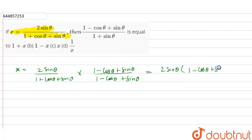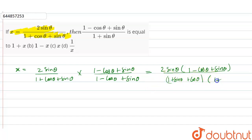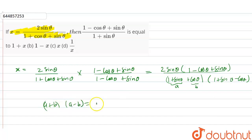So now we can see that we can write this as 2 sin theta into 1 minus cos theta plus sin theta in the numerator. The denominator can be written as 1 plus sin theta plus cos theta into 1 plus sin theta minus cos theta. Let's suppose this is a, and this is b.